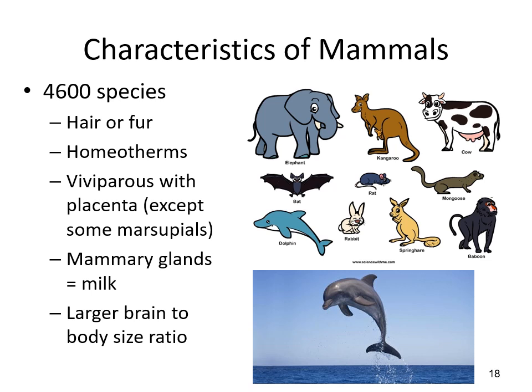Now we move on to mammals. There are 4,600 species of mammals. A mammal has hair or fur, is a homeothermic endotherm similar to birds, has live birth — though some lay eggs, most eutherian mammals give live birth — they have mammary glands which release milk, and they have a large brain-to-body size ratio.